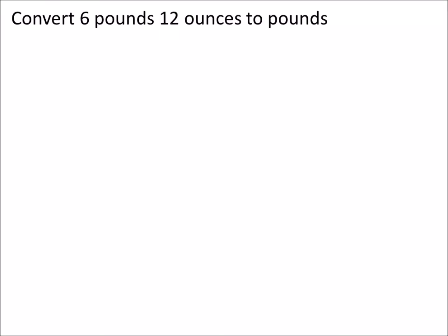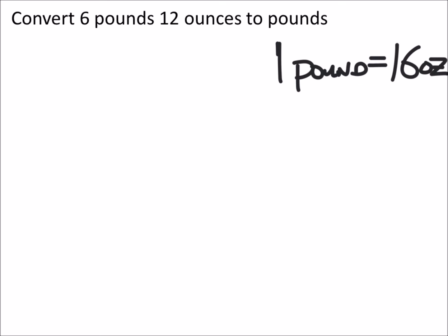Convert six pounds 12 ounces to pounds. We know that one pound is the same as 16 ounces. So we're going to have six pounds automatically, and since 12 ounces isn't a full pound, the answer should be six point something. If we wanted to change ounces to pounds, we start with 12 ounces.